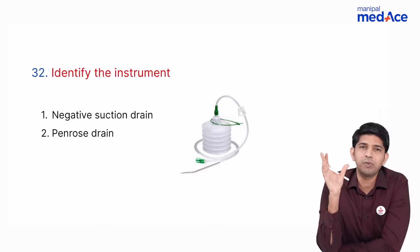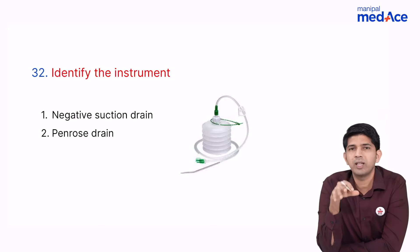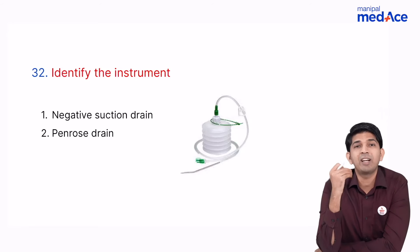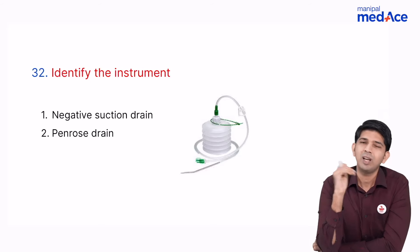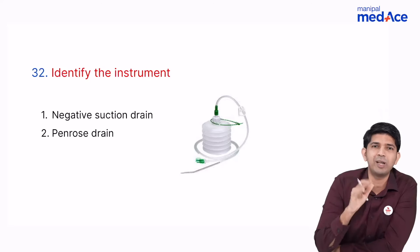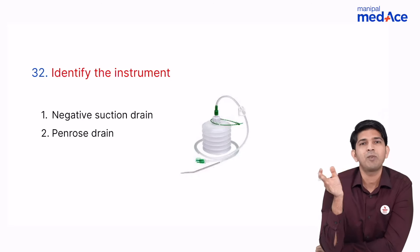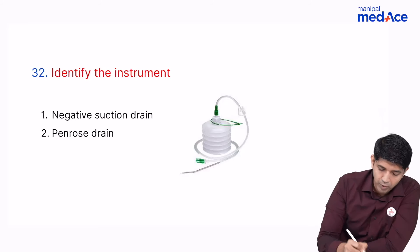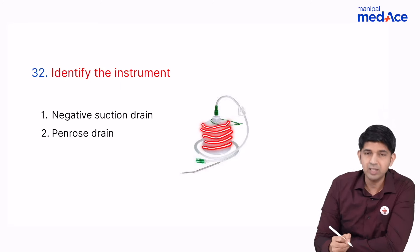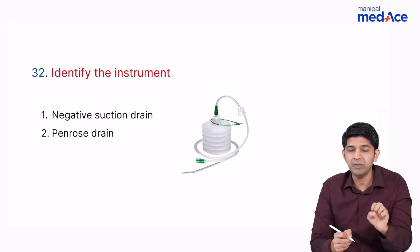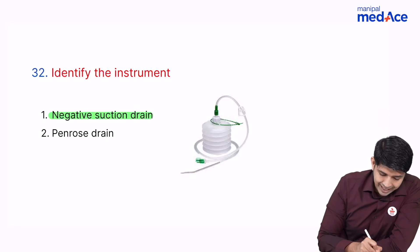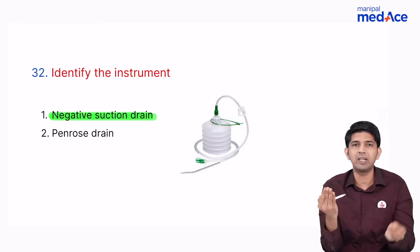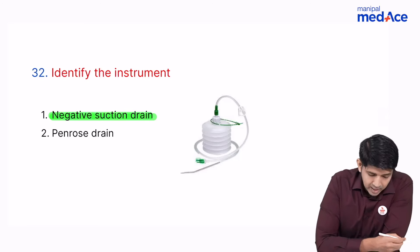An image of a drain was shown and students were asked to identify its type — open drain, closed drain, suction or non-suction. The drain shown was a Romovac drain — 'vac' indicates vacuum, meaning negative suction. This is a closed negative suction drain. A Penrose drain is an open drain — a tube placed inside the wound allowing fluid to drain passively. Romovac drain equals closed negative suction drain.